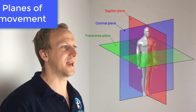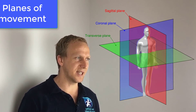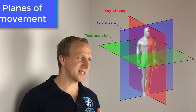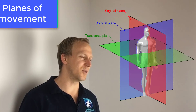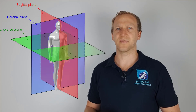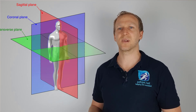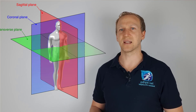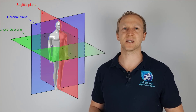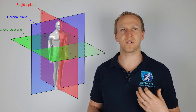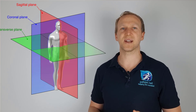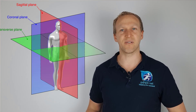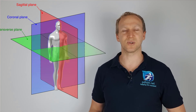We're about to look at some joint actions, but before we do, let's go through the planes of movement. Joint actions occur through different planes of movement. We have the sagittal plane, which cuts the body down the middle through the nose, down the belly button, and between the legs. We have the coronal plane, which cuts the body across from shoulder to shoulder. And then we have the transverse plane, which cuts the body in half around the torso section.